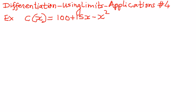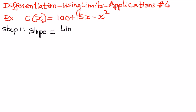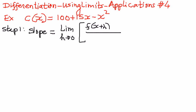To solve these types of application problems, we're going to follow the steps we have followed in the previous examples. In step number one, we're going to write the formula the way we know it. The formula for the slope or the first derivative is going to be equal to the limit as h approaches 0, of f of x plus h minus f of x, this whole thing divided by h.